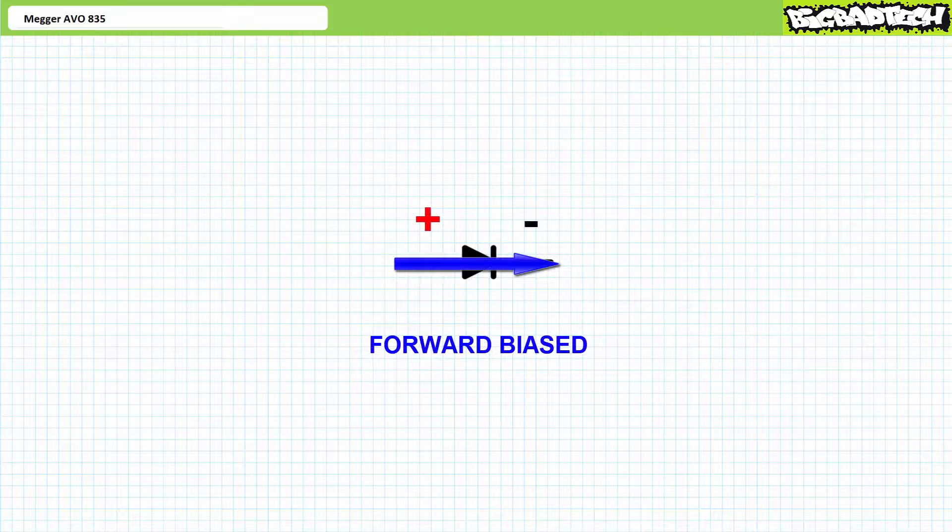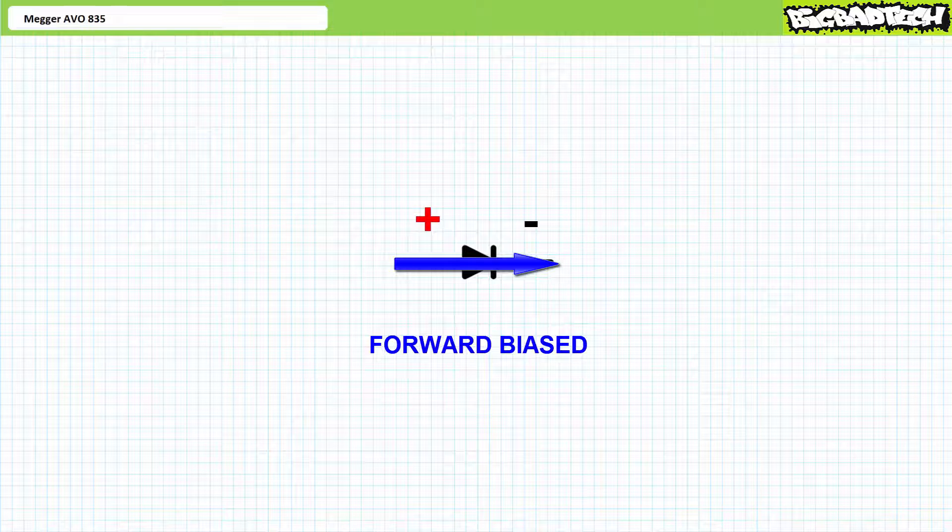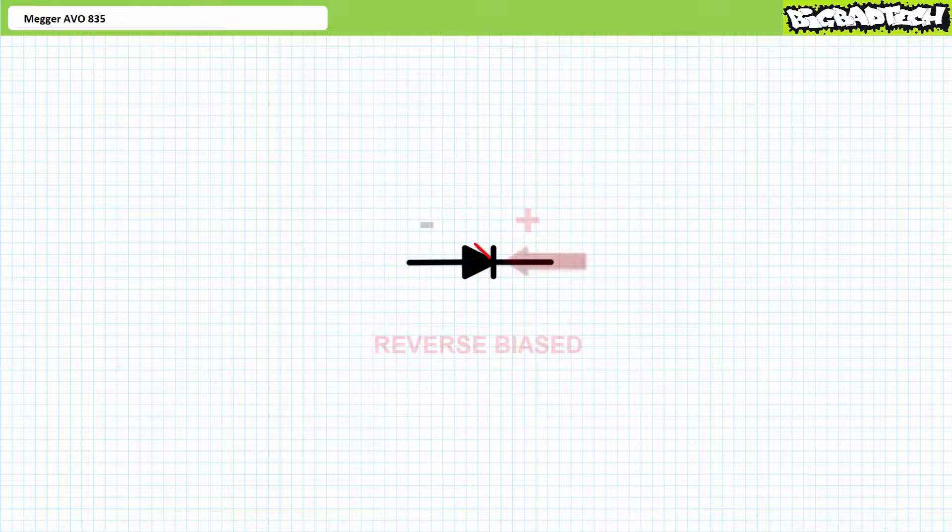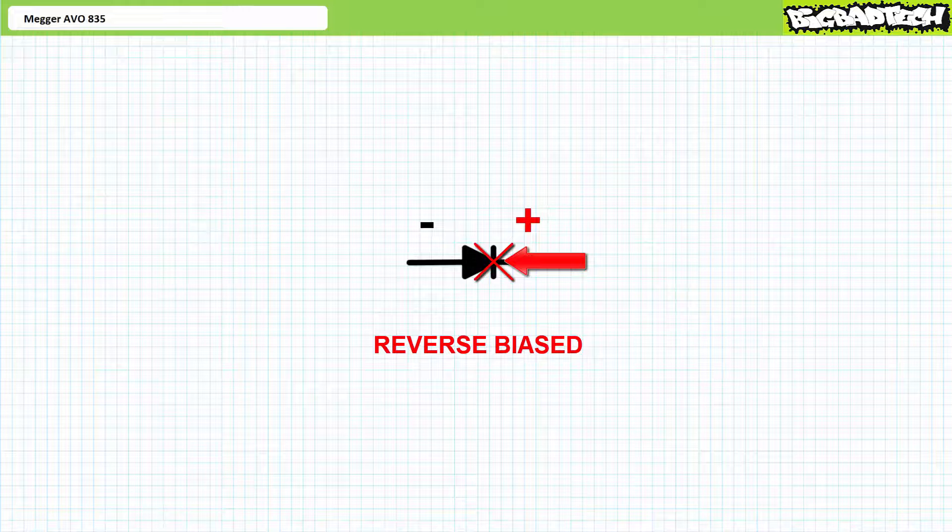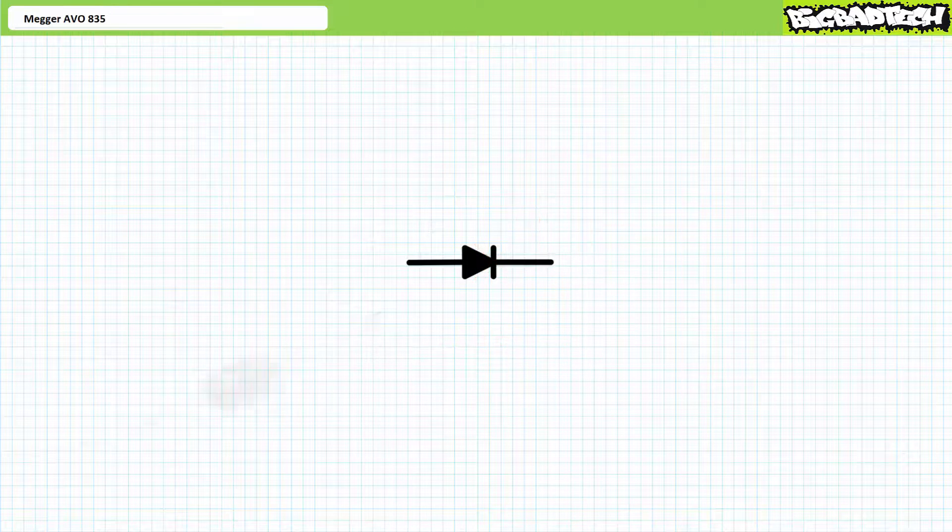When forward biased, positive to negative, left to right, conventional current will flow. However, when reverse biased, positive to negative, right to left, conventional current will not flow. Physically, the block direction of conventional current flow is often represented having a band scribed on that terminal.